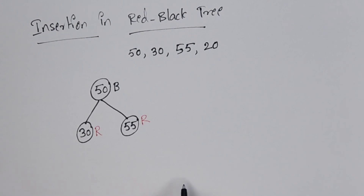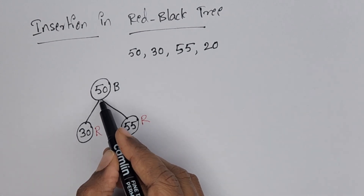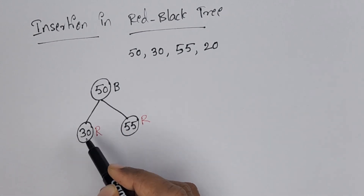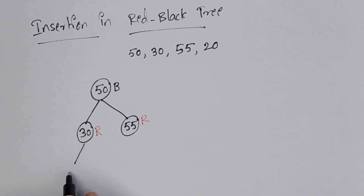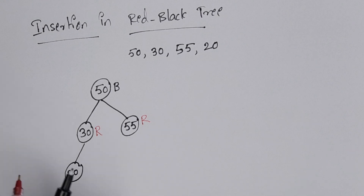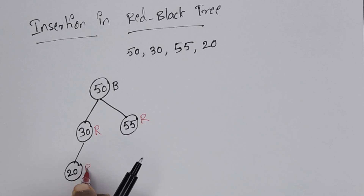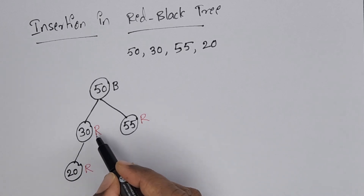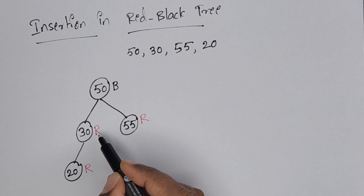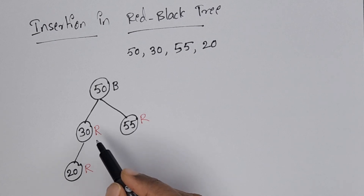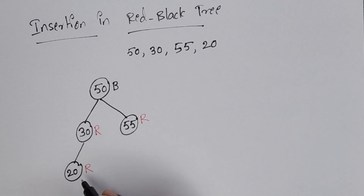Add one more element, 20. 20 is less than 50 and less than 30, so insert 20 on the left side of 30. The new node is colored red. Now the parent is also red, which means we have a red-red conflict. No two adjacent nodes can be red.